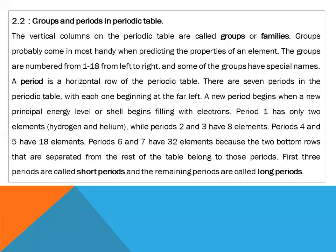Groups are the vertical columns on the periodic table, also called families. Groups are most useful when predicting the properties of any element. The groups are numbered from 1 to 18, from left to right. Groups 1 and 2 are s block elements — group 1A is the alkali metals and group 2A is the alkaline earth metals.